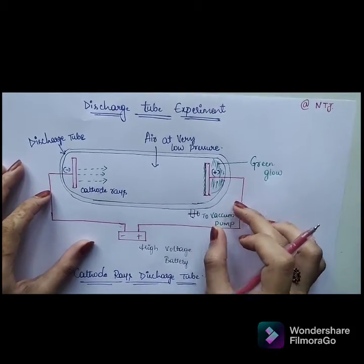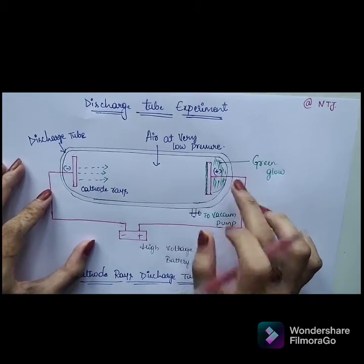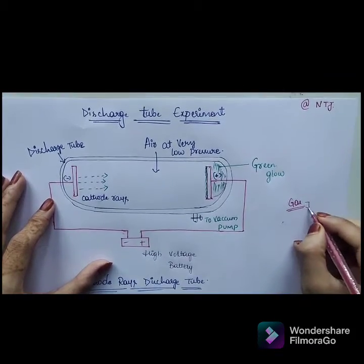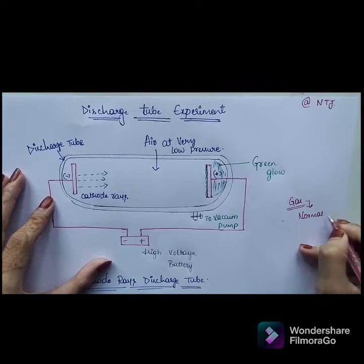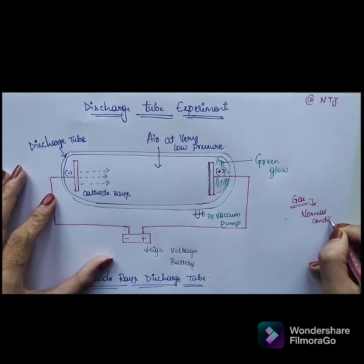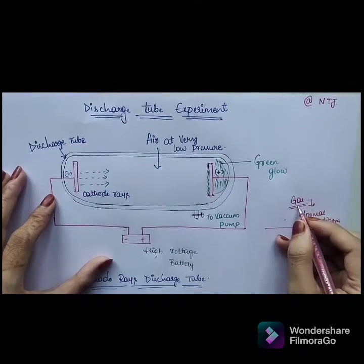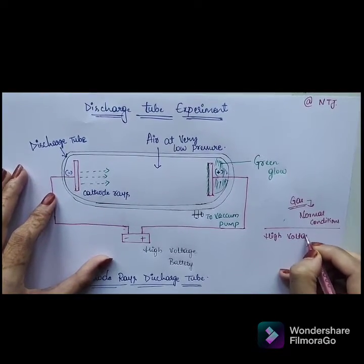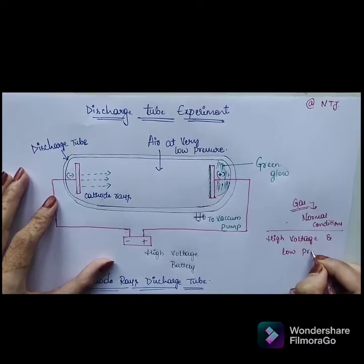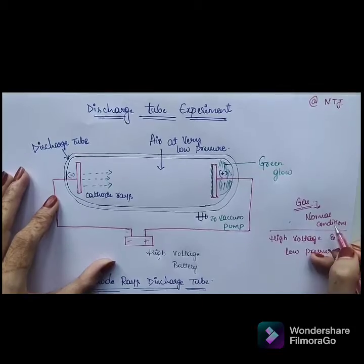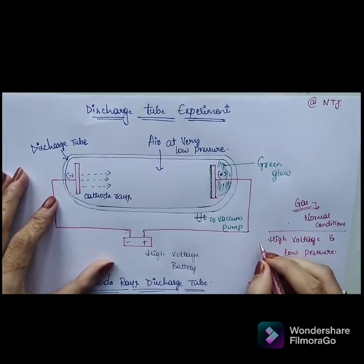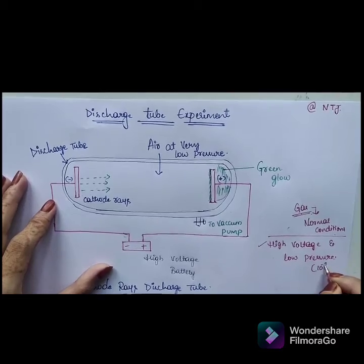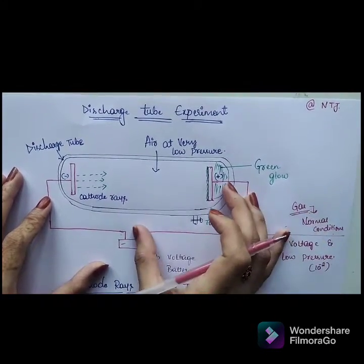This apparatus mainly consists of a cylindrical glass tube. Before that, we know that gas is usually a poor conductor of electricity under normal conditions of temperature and pressure — it may not conduct any kind of electricity. But if we subject any gas to a high voltage and low pressure, which is almost about 10 to the power of minus 2, gases will conduct electricity.